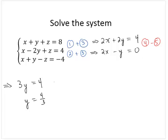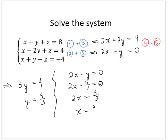Now, using y equals 4 thirds, I can solve for x. Now, I know that 2x minus y equals 0. So that means that 2x minus 4 thirds equals 0, which means that 2x is equal to 4 thirds. And dividing by 2, x is equal to 2 thirds.